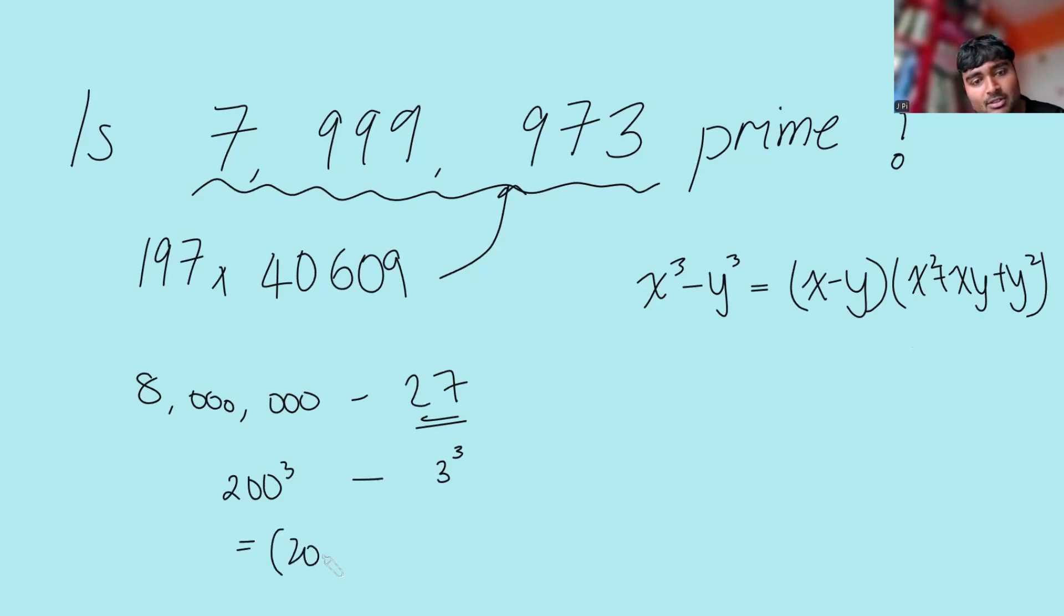So this thing here should be the same as (200 minus 3) times (200 squared plus 200 times 3 plus 3 squared).